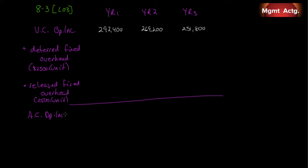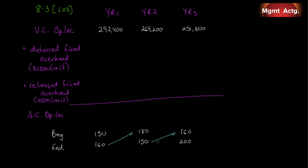To do this, all we need to know is whether inventories increased or decreased from the beginning to the end of the year. If they increased, we deferred some fixed overhead; if they decreased, we released some fixed overhead. In year one we started at 150 and ended at 160; in year two we started at 180 and ended at 150; and in year three we started at 160 and ended at 200. For the sharp ones watching, you'll notice that year one's ending inventory should equal year two's beginning inventory, but they don't — the question is just using different scenarios to test your ability.